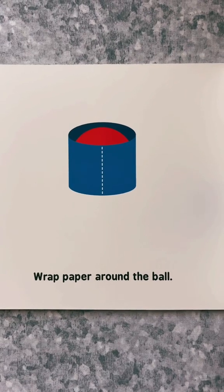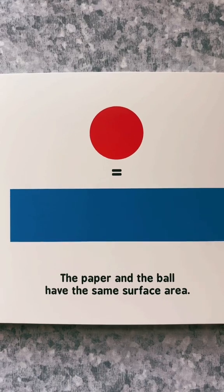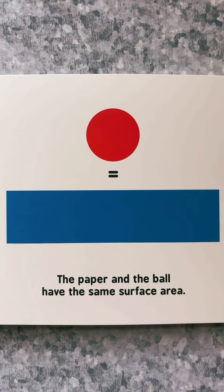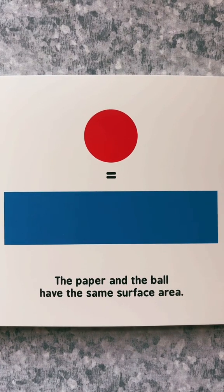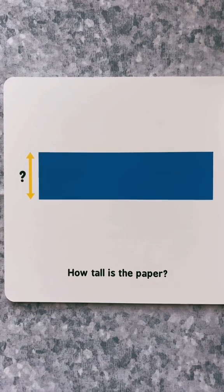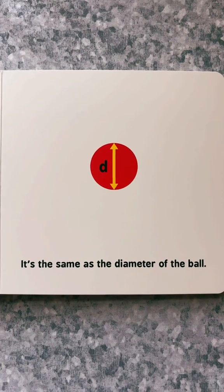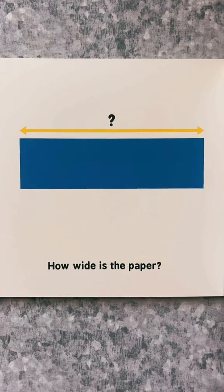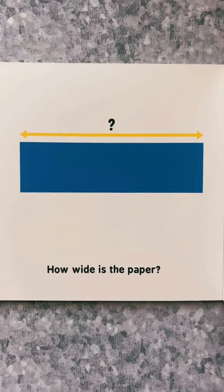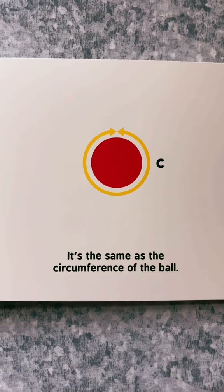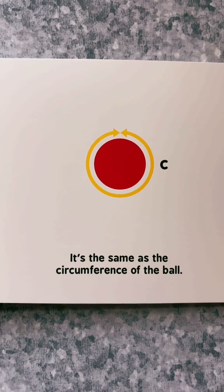Wrap paper around the ball. The paper and the ball have the same surface area. How tall is the paper? It's the same as the diameter of the ball. How wide is the paper? It's the same as the circumference of the ball.